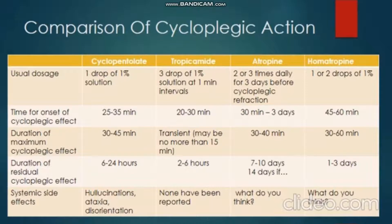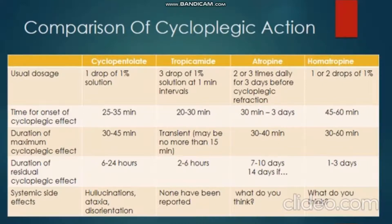Atropine is applied two or three times daily for three days before cycloplegic refraction. For very young infants or children, ointment can be recommended; for adults, eye drops are used. Time of onset of cycloplegic effect is about 30 minutes to three days. Duration of maximum cycloplegic effect lasts 30 to 40 minutes. Duration of residual cycloplegic effect lasts up to 7 to 14 days. Systemic side effects should be noted.